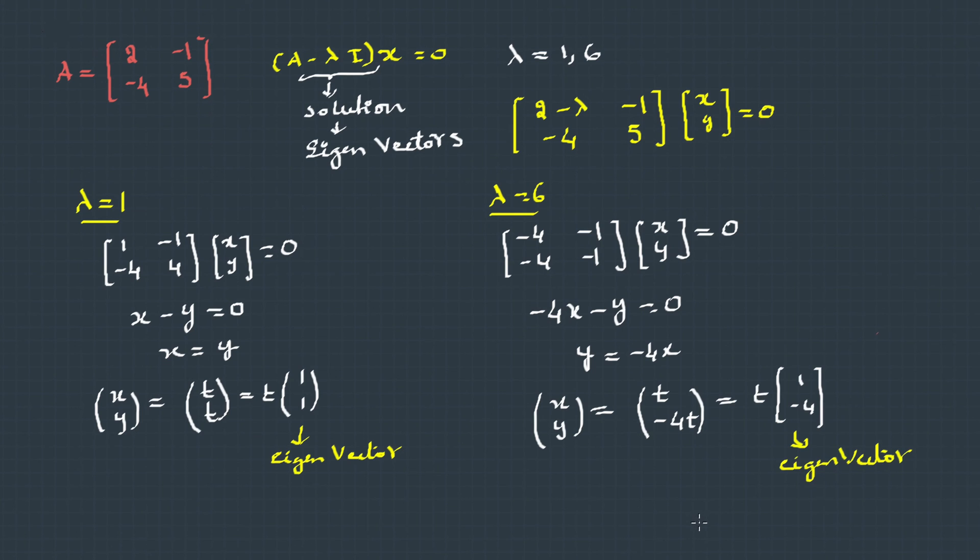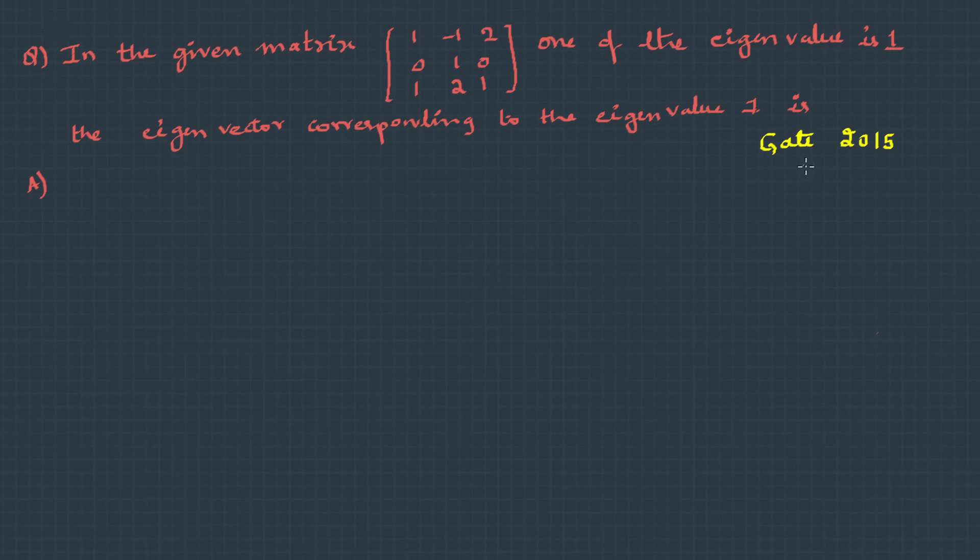Now let's try for a 3 by 3 matrix. Here we have a question asked in GATE 2015. In the given matrix, one of the eigenvalues is 1. The eigenvector corresponding to the eigenvalue 1 is...